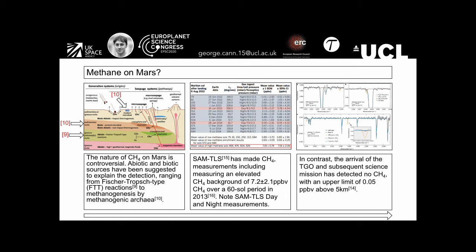Is there methane on Mars? The nature of methane on Mars is still controversial, with biological and non-biological sources having been suggested to explain the detection. SAM-TLS, or Sample Analysis at Mars tunable laser spectrometer, on board Curiosity has made methane measurements during the day and night, including a methane background of 7.2 plus or minus 2.1 parts per billion over a 60 sol period.